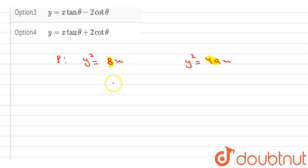From here we can get 4a equal to 8 so we can get a equal to 2. And we know that equation of tangent to parabola...